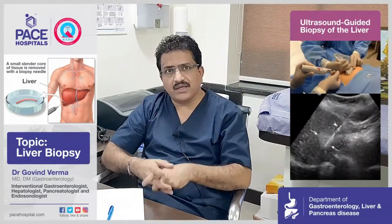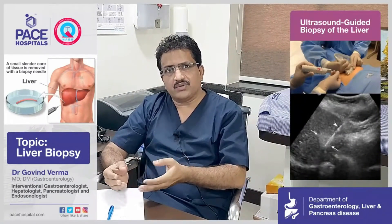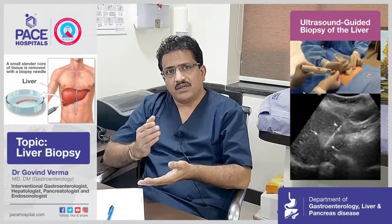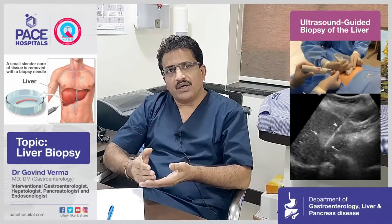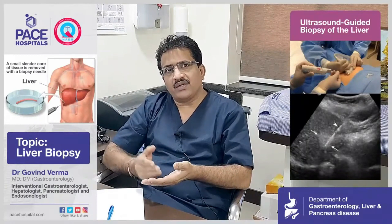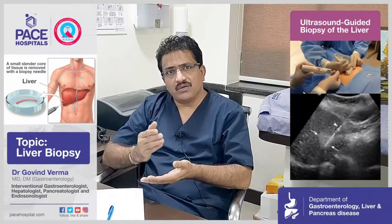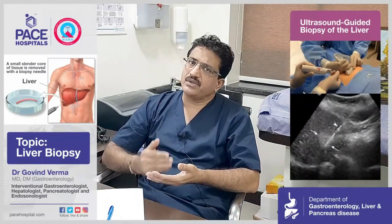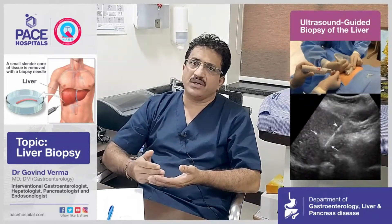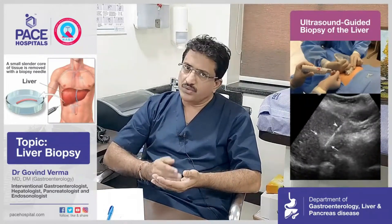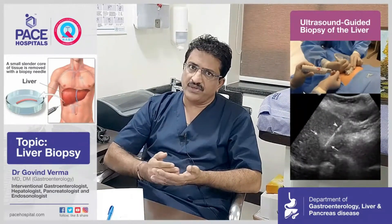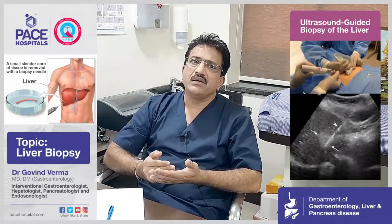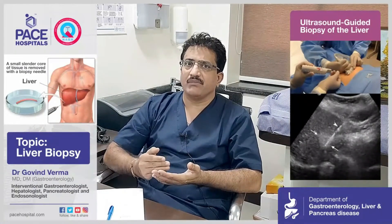This is called histopathology — a pathologist will examine the cut section of the liver tissue. They stain it with different colorful stains to determine the reason for the liver disease, the stage of the liver disease, and the stage of fibrosis. All this information pertaining to liver disease can be obtained by taking a liver tissue sample.